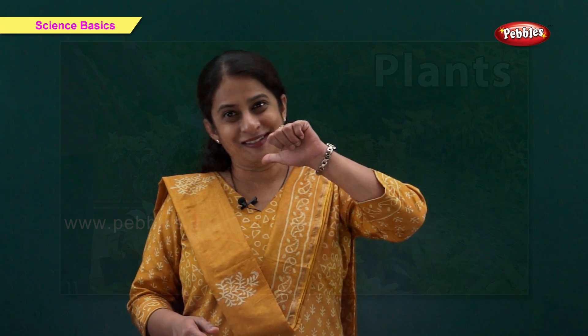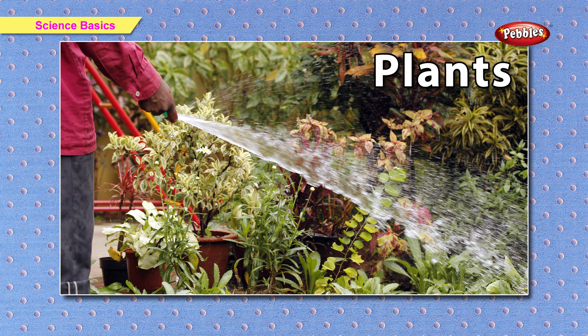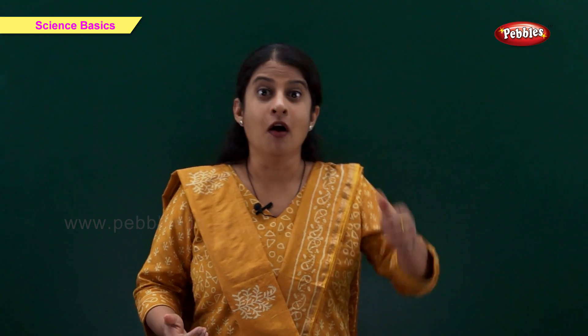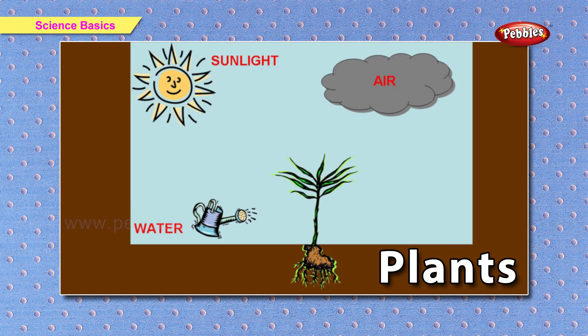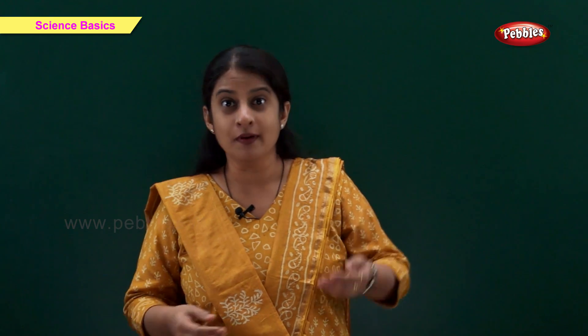Plants live in soil and drink water. The needs of plants are water, air, soil, and light. Plants can make their own food with the help of sunlight.